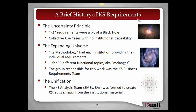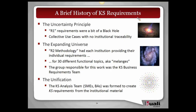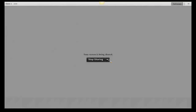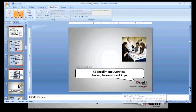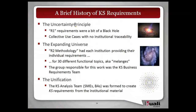So we went to a different methodology, which at the time we cleverly termed our R2 methodology — now I would encourage you to think of it as our enrollment methodology. I call this the expanding universe, because in this case we had each institution contribute their own individual institutional requirements. As it turned out, enrollment being as large as it is, covering as much information as it needs to cover, it ended up being over 30 different functional topics.